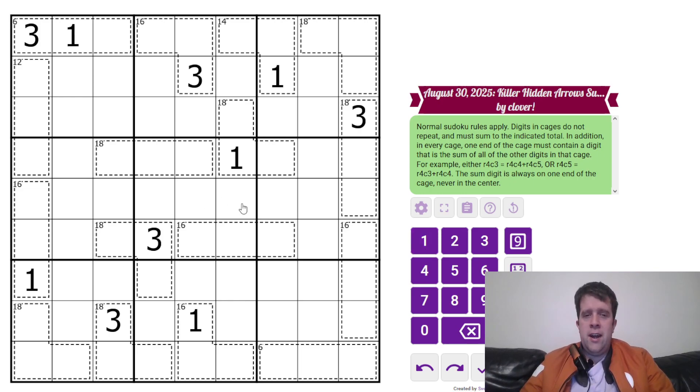This is Killer Hidden Arrows. Normal Sudoku rules apply. Each box, each row, and each column must contain one to nine once each. Now, digits in cages do not repeat and must sum to the indicated totals. We already know that has to be a two because three plus one plus two makes six.